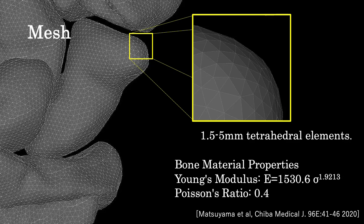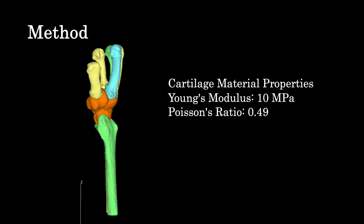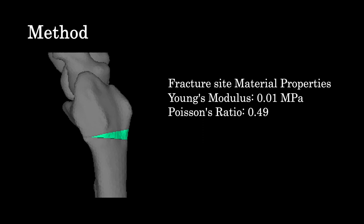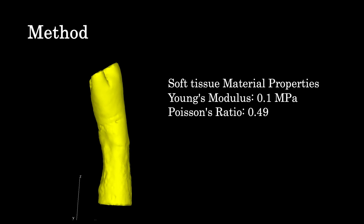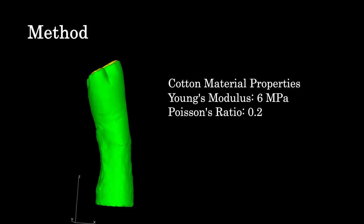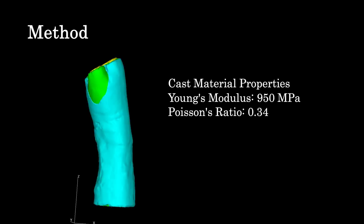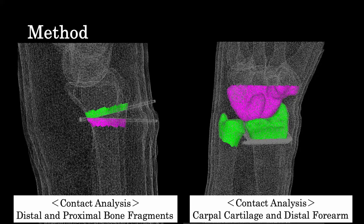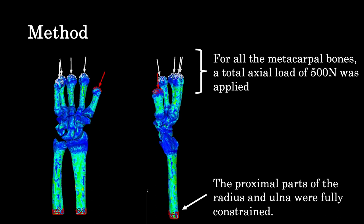The material property of the bone used the conversion formula of Matsuyama from our laboratory. The material properties of the cartilage, FDP, and cut are as per the slide, as are the fracture site, soft tissue, cotton, and cast. The cartilage of the carpal bone and the distal end of the radius were subjected to contact analysis, and contact analysis was also conducted between the bone fragments at the fracture site. The proximal part of the radius and ulna were fully constrained. For all metacarpal bones, a total axial load of 500 N was applied.